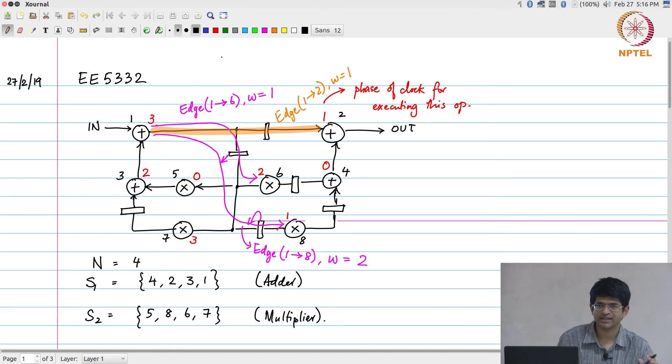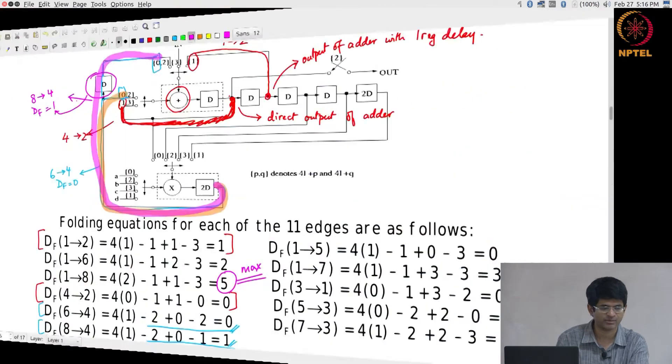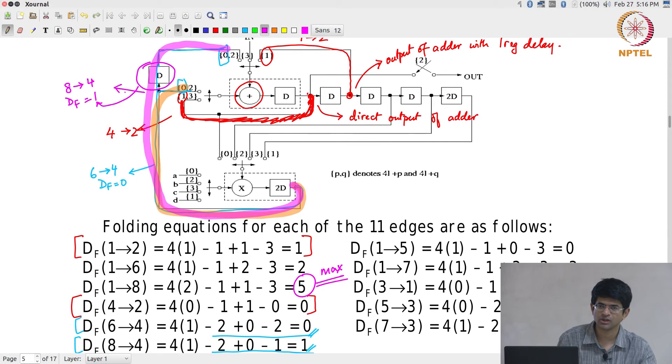Assuming that I can come up with those folding orders, the next question is how do I compute the DF values and how do I come up with the hardware architecture? That is more routine, fairly straightforward to do. I can basically put down a basic architecture, put down the number of registers after it and make all the connections.